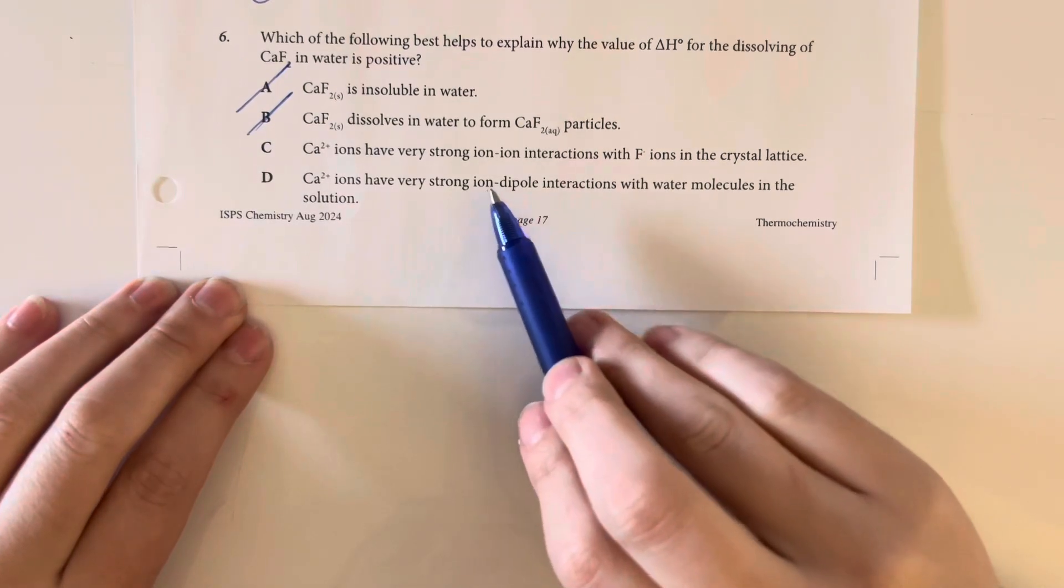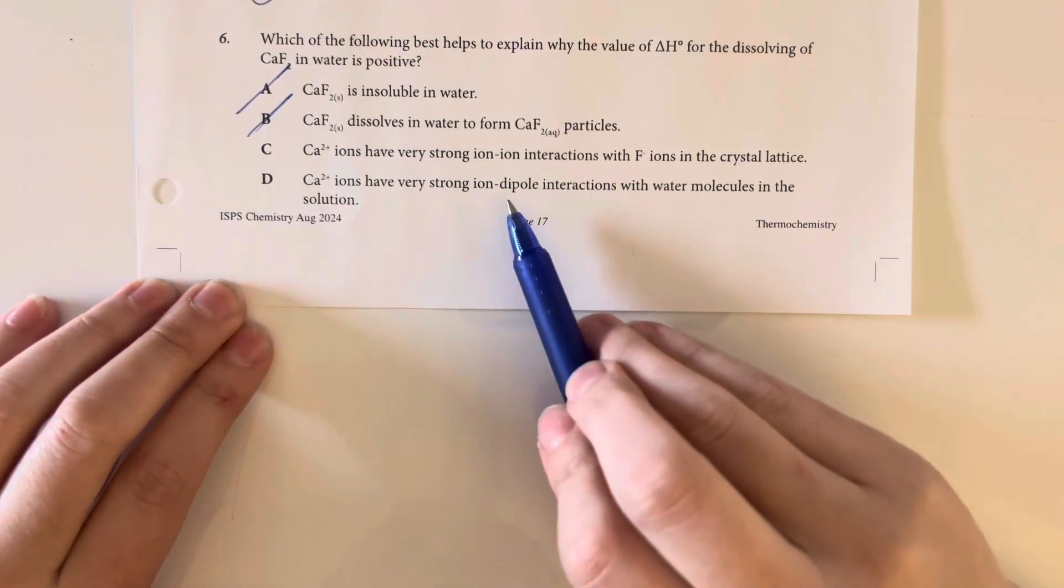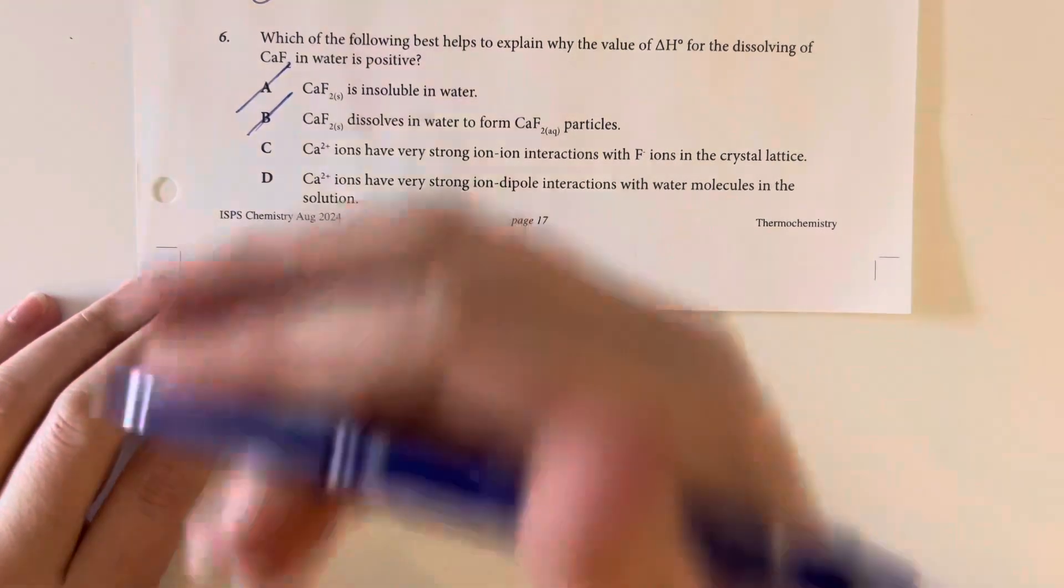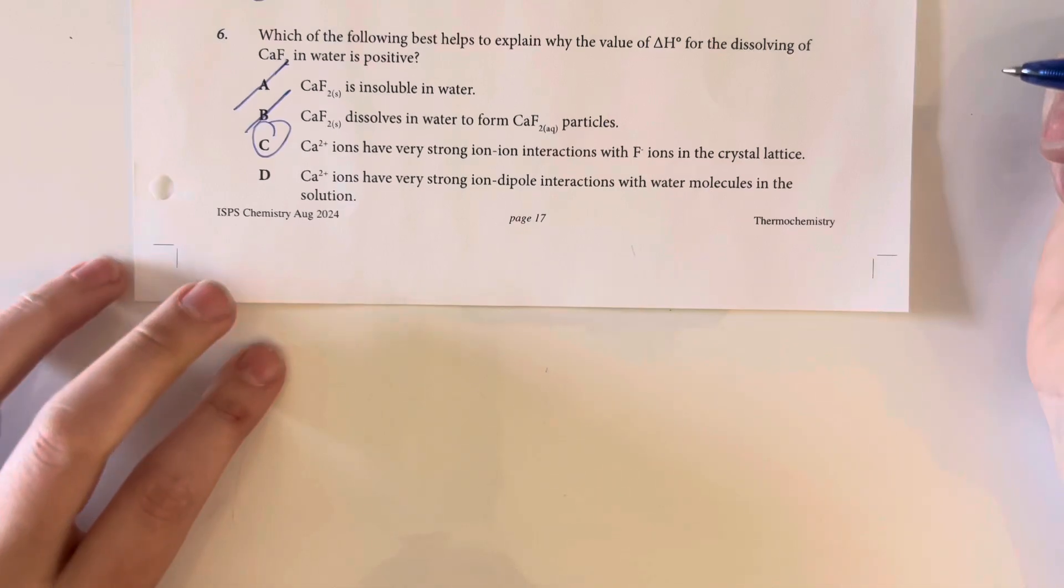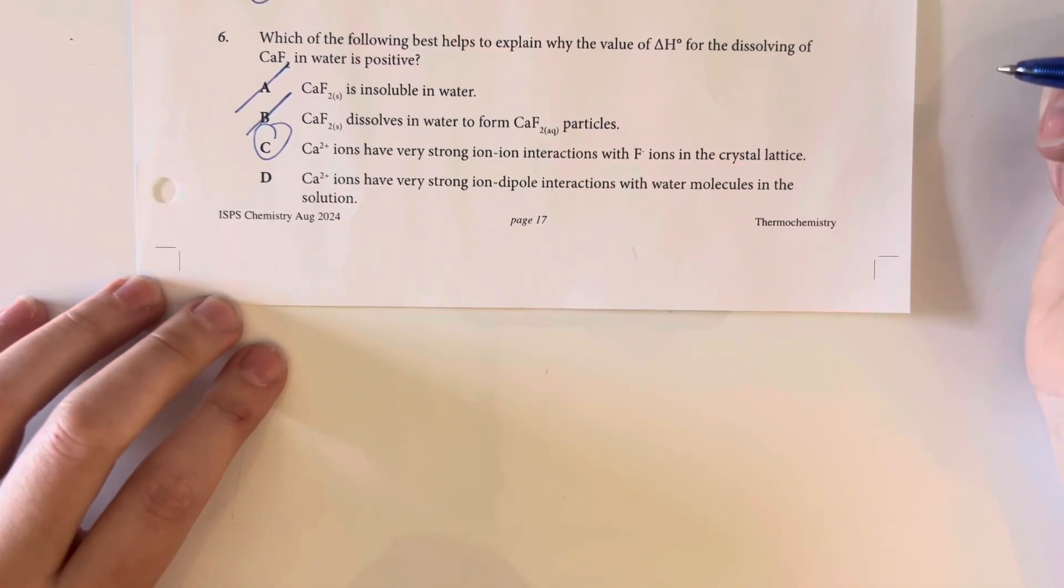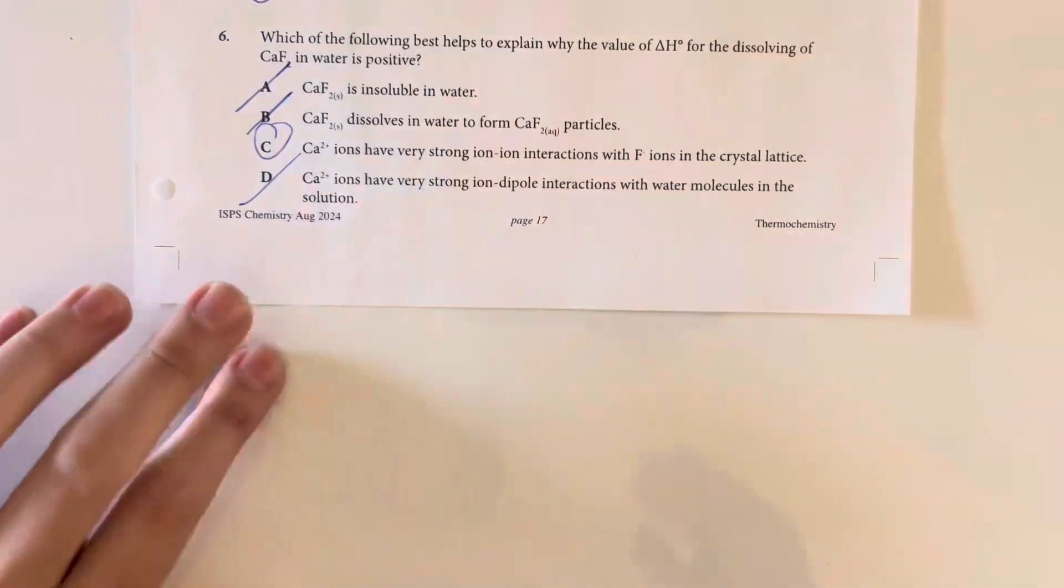Option choice D says ion-dipole interaction. Calcium and fluorine are ion-ion. They are not ion-dipole. This is not a temporary charge situation. This is a permanent charge, so that would be ion-ion, not ion-dipole.